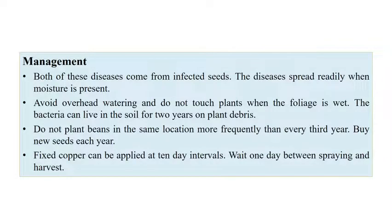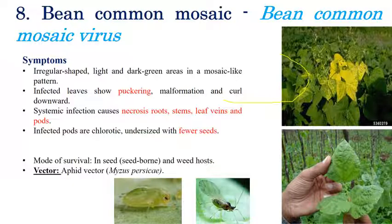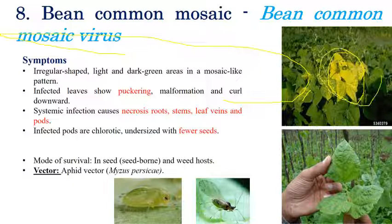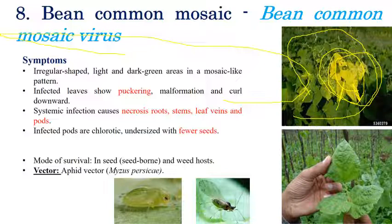The next disease is bean common mosaic, caused by Bean Common Mosaic Virus — a viral disease. Light to dark color mosaic patterns can be seen; infected leaves show complete necrosis or conversion to yellow. Stems, leaf veins, and pods can all be affected; in later stages, the entire field slowly turns yellow. Pods are also chlorotic and few seeds are produced. It is a seed-borne disease and can also survive in weed hosts. The aphid vector is Myzus persicae, which transmits the virus.